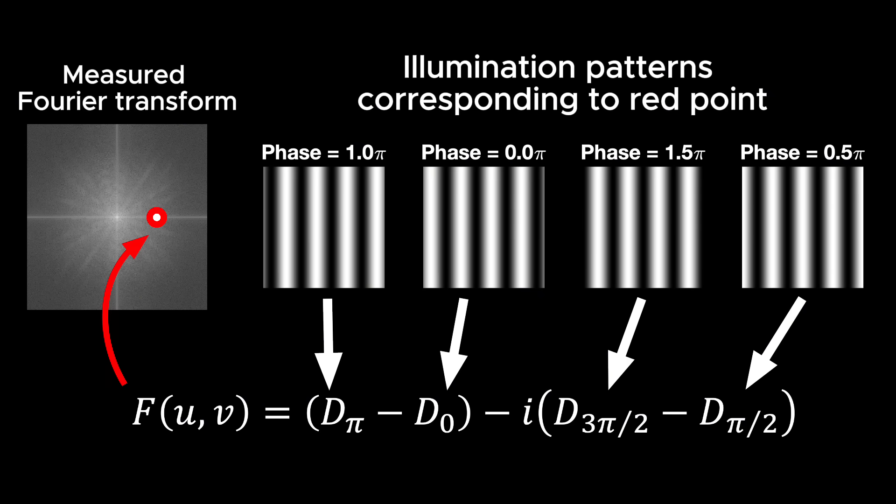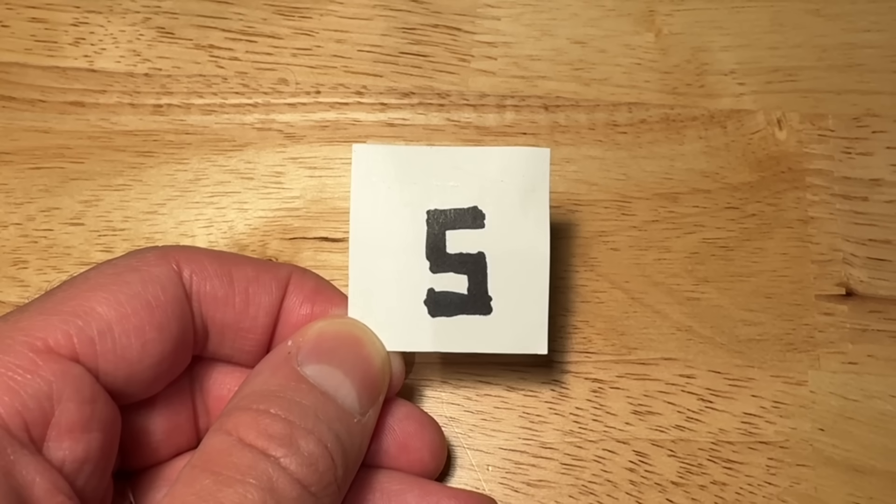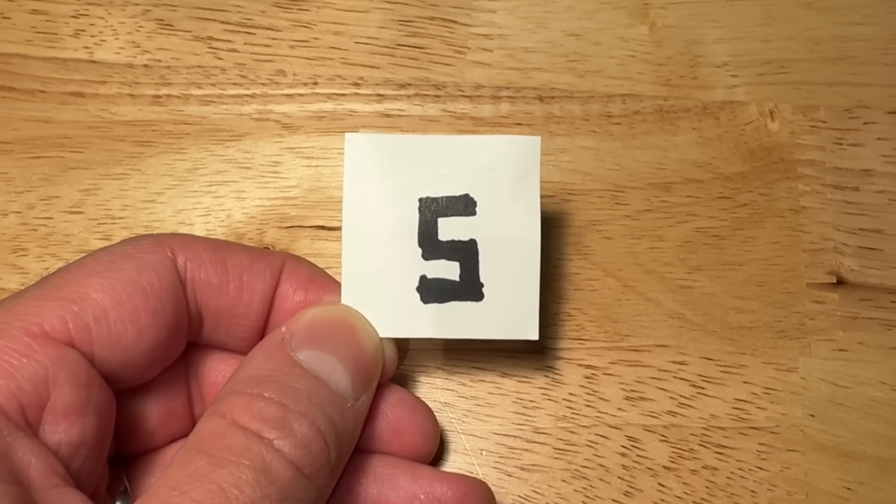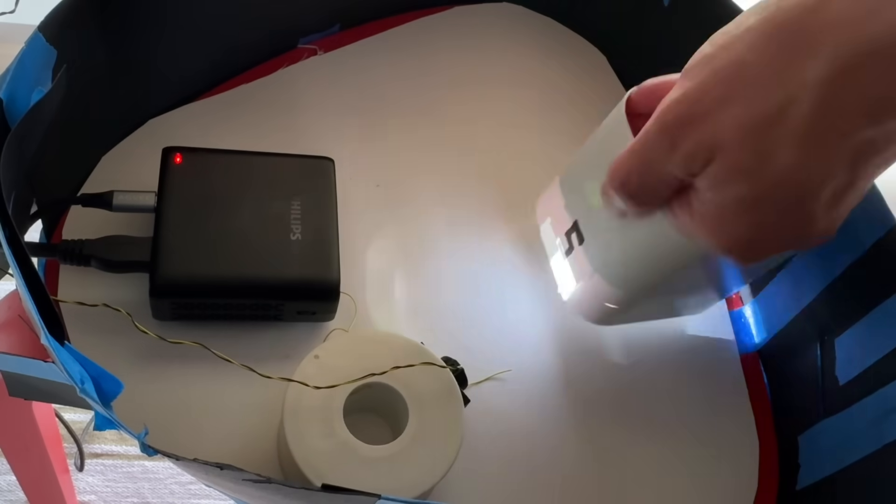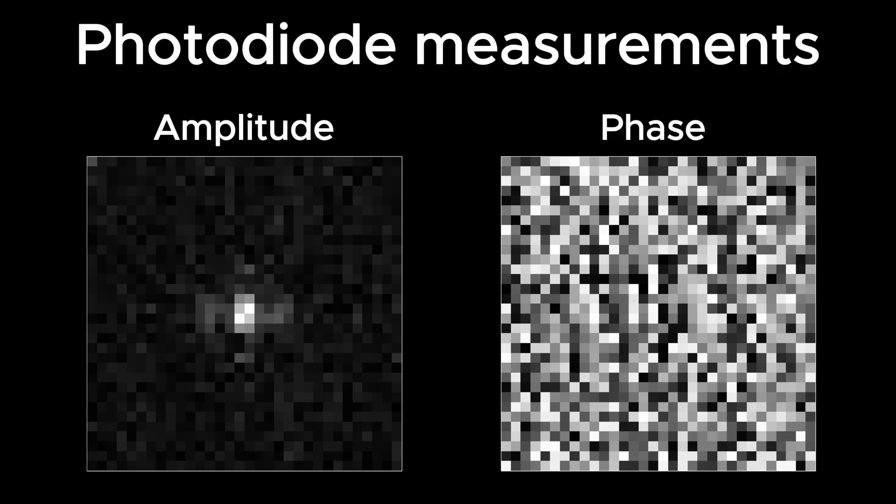So each point requires 4 patterns. I tested this experimentally using a simple object, just a drawing of the number 5. I illuminated the paper with the sinusoidal patterns required for calculating a 32 by 32 pixel Fourier transform of the scene. Here's the measured Fourier transform. Again, this is calculated only from the photo detector measurements. And after taking the inverse Fourier transform, this is the reconstructed image. It's a bit noisy, but it's definitely a number 5. I was pretty excited when I first got this result.